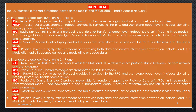Third is RLC — Radio Link Control is a layer 2 protocol responsible for transfer of upper layer protocol data units in 3 modes: acknowledged mode, unacknowledged mode, and transparent mode. It provides retransmission controls, duplicate detection and reordering. Fourth is MAC — Medium Access Control layer provides the radio resource allocation service and the data transfer service to the upper layer. Fifth is PHY — Physical layer is a highly efficient means of conveying both data and control information between an E-NodeB and UE, using modulation of radio frequency carriers and modulating encoded data.